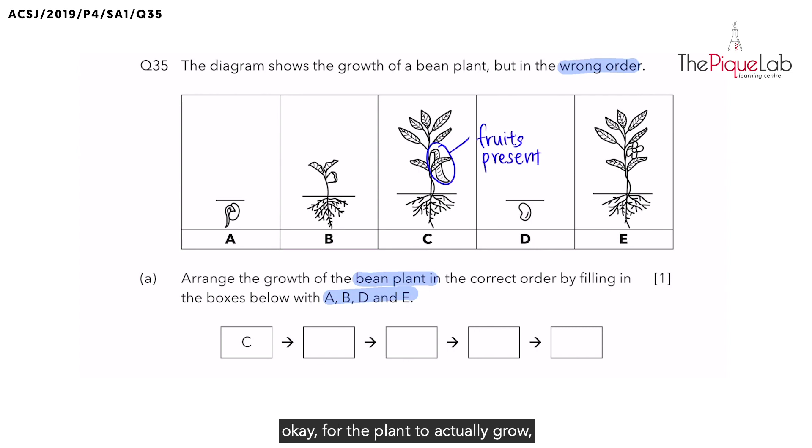But what I would tell them is this: for the plant to actually grow, it undergoes what we call the plant's life cycle. And when we use the word cycle, what's the meaning of cycle? It means that it is actually a sequence of events that repeats itself again and again.